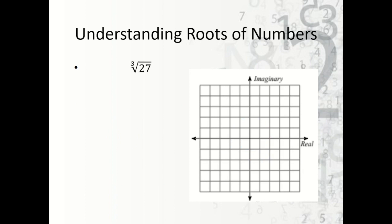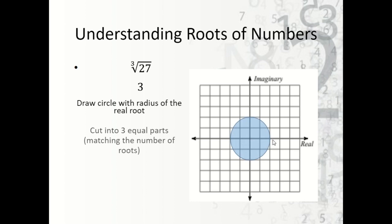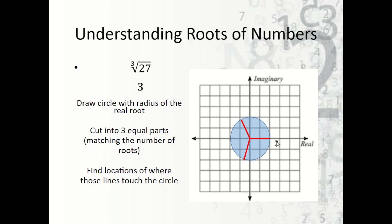Now the cube root of 27: the real root is 3, because 3 times 3 times 3 is 27. We draw our circle with radius 3 and cut it into 3 equal parts. 360 divided by 3 gives 120 degrees, so we place roots every 120 degrees. This gives us one root at 3, and then we need to figure out the other two by making a triangle.